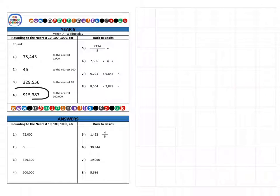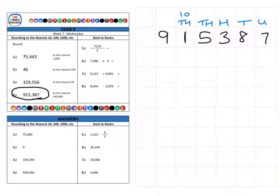Finally, on to question 4, which is 915,387. Again, we're going to label our columns: units, tens, hundreds, thousands, ten thousands, and one hundred thousands. We're going to be rounding this number to the nearest 100,000.